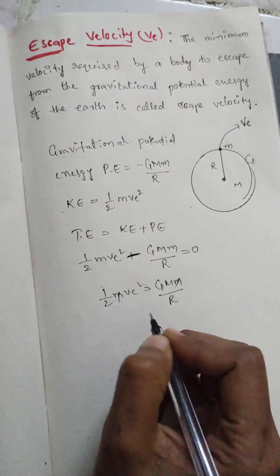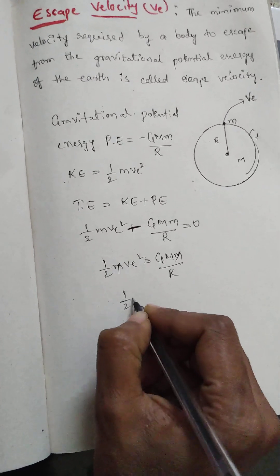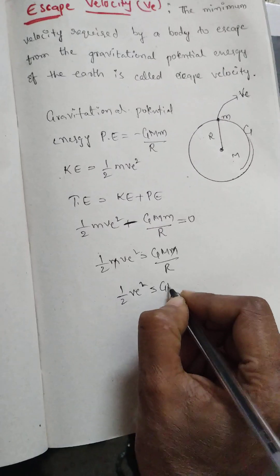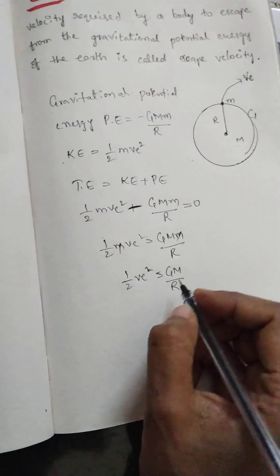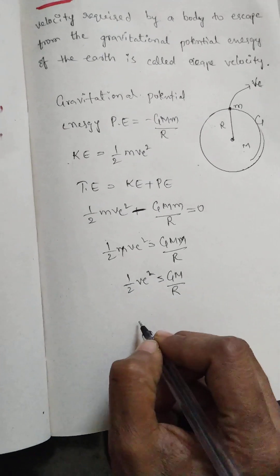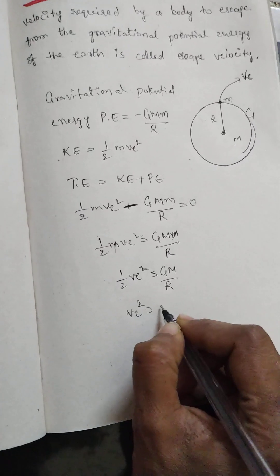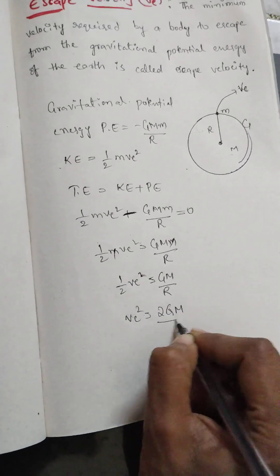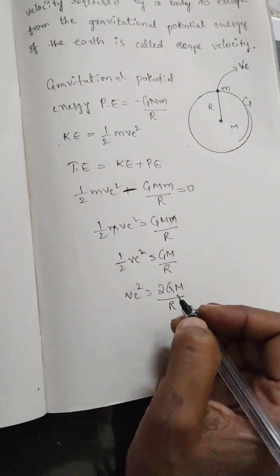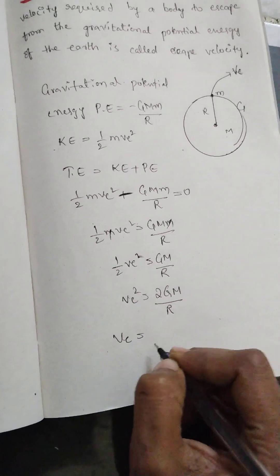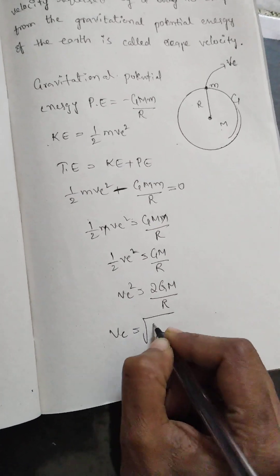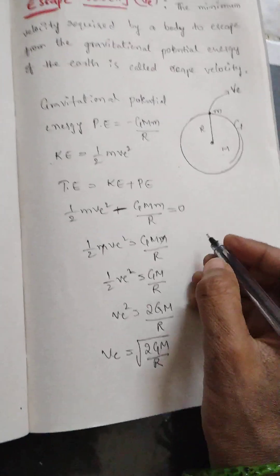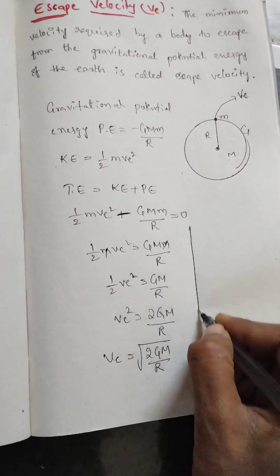From this, ½mv² = GMm/R. The mass m cancels on both sides, giving ½v² = GM/R. Cross-multiplying, we get v² = 2GM/R, so the escape velocity is vₑ = √(2GM/R).